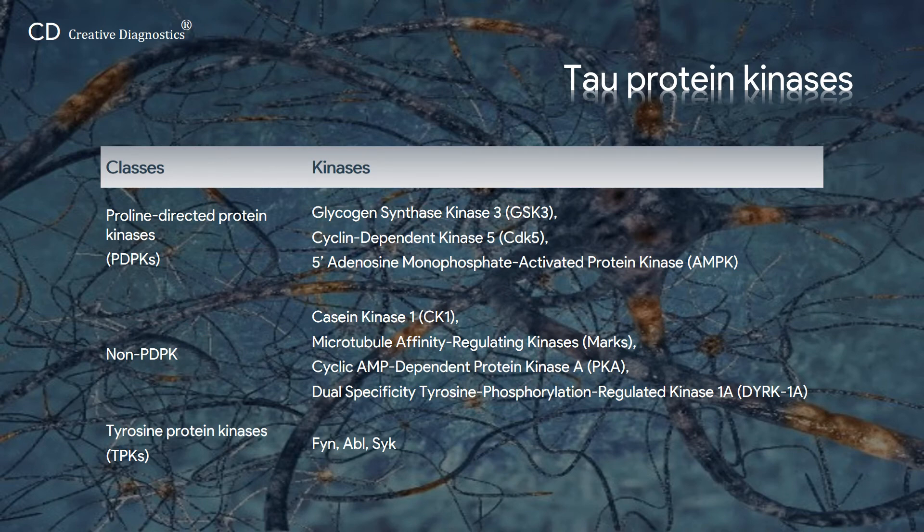A large amount of Tau protein kinases have been described, and can be subdivided into three classes: proline-directed protein kinases, non-proline-directed protein kinases, and tyrosine protein kinases.